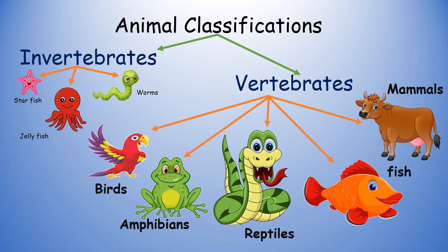Mammals include humans and all other animals that are warm-blooded vertebrates with hair or fur. They feed their young with milk and have a more well-developed brain than other types of animals. Some examples of mammals are human beings, cat, dogs, monkeys and cow.